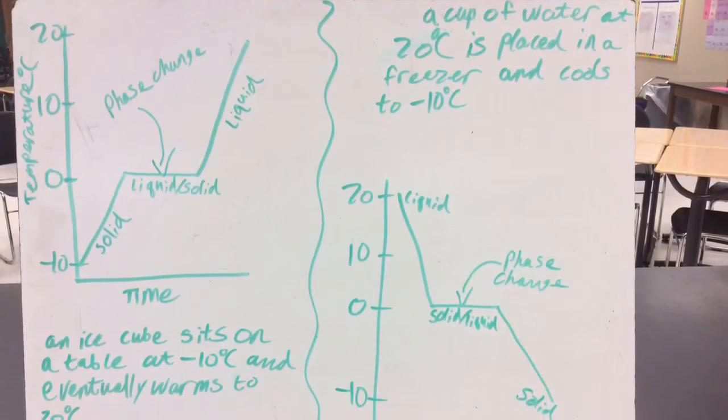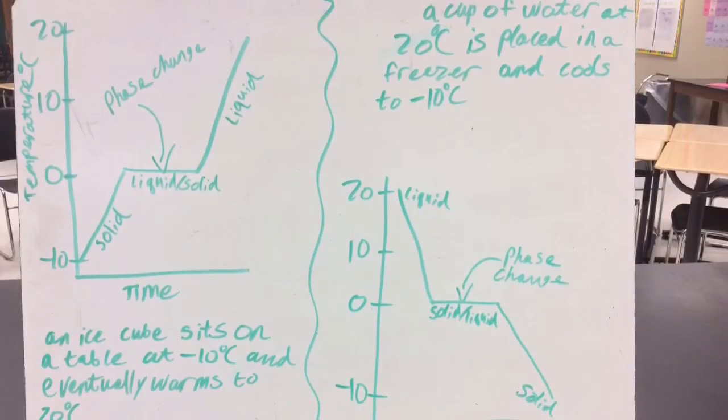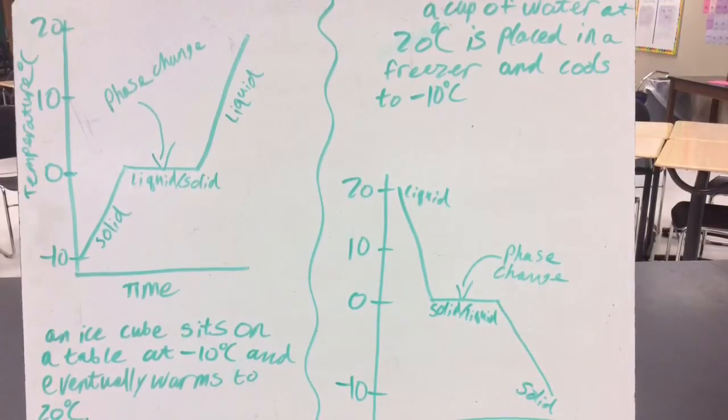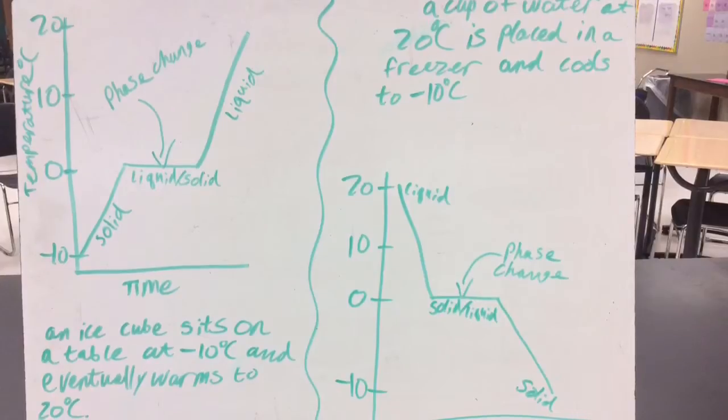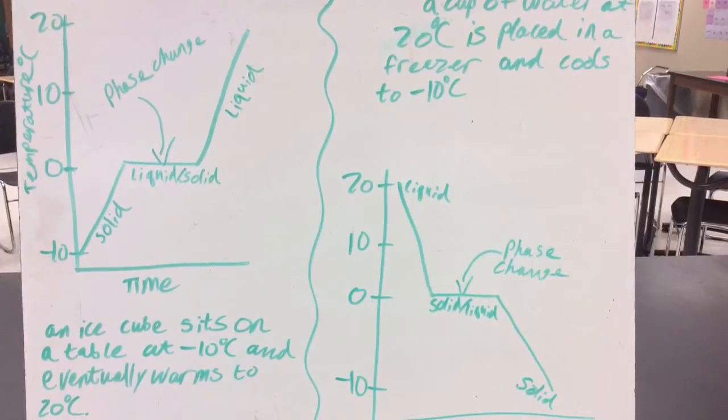On the left we see a graph of an ice cube that sits on a table at negative 10 degrees Celsius and eventually warms to 20 degrees Celsius.